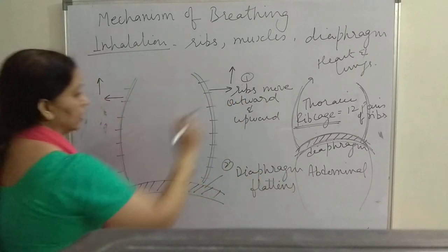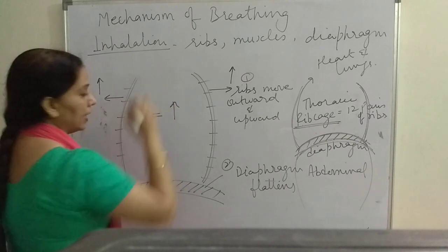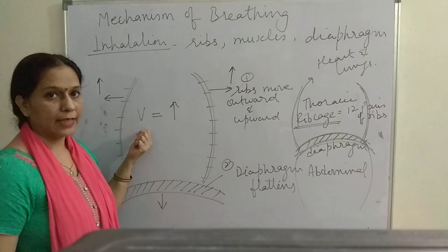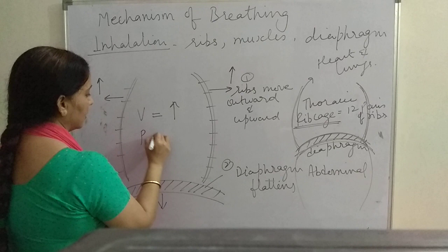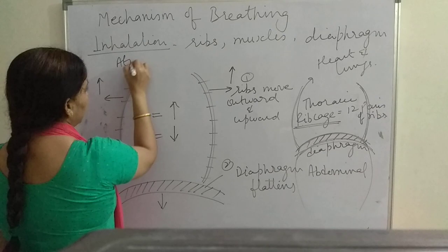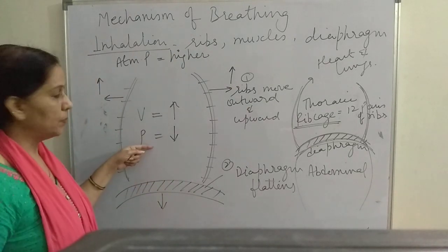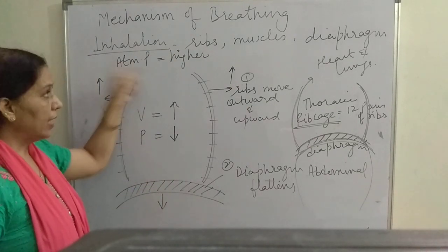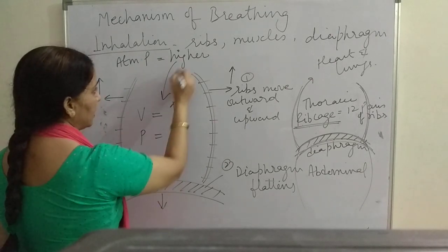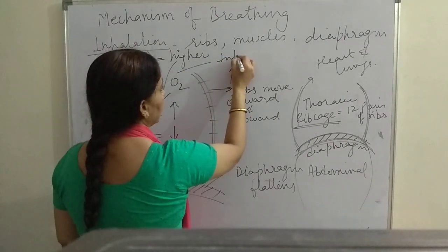So: first action, ribs move outward; second action, diaphragm goes downward. Volume of the thoracic cavity will increase. This will increase the pulmonary pressure — the pressure of air inside the lungs. As volume increases, pressure of the lungs decreases. Comparing it with atmospheric pressure outside, that pressure is higher. Air always rushes from high pressure to low pressure, so air moves from outside to inside, taking in oxygen and causing inhalation.